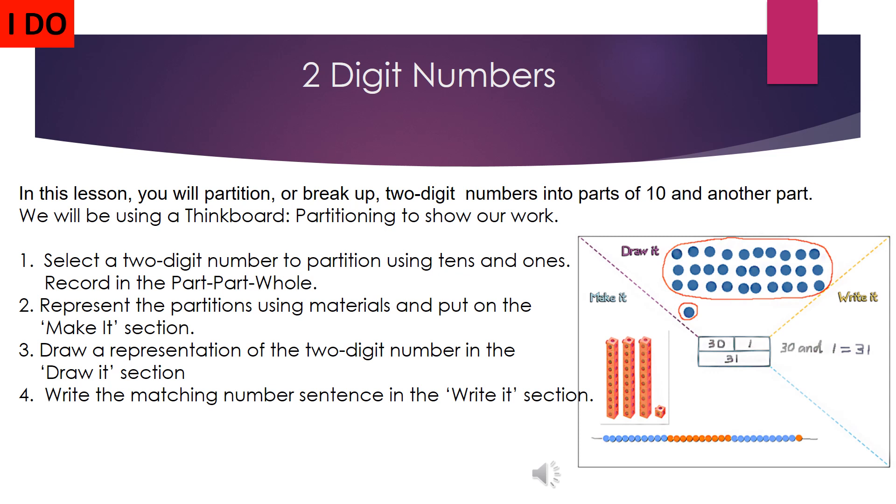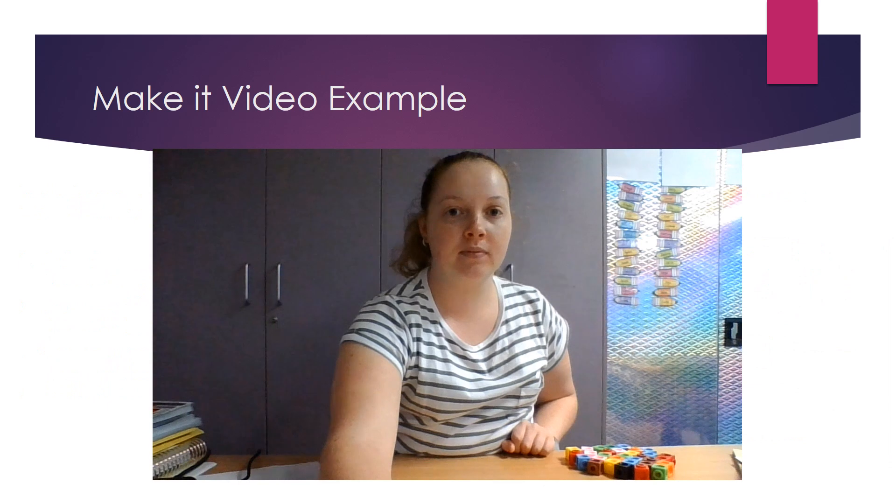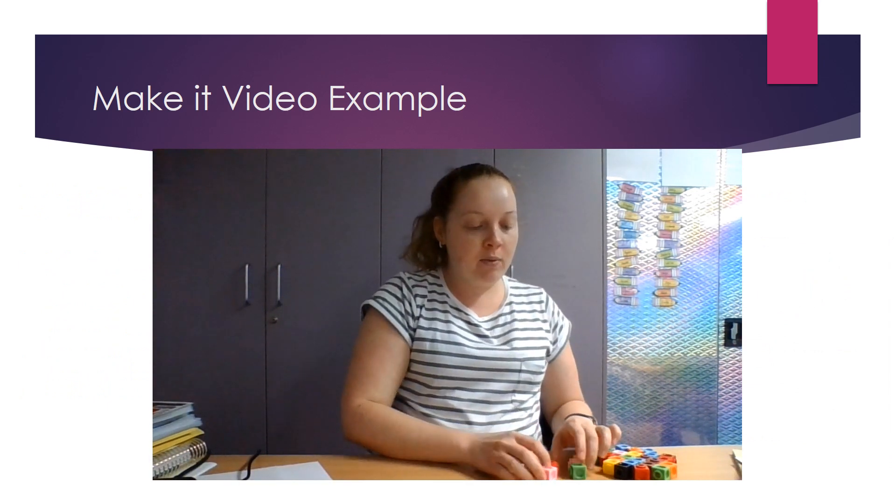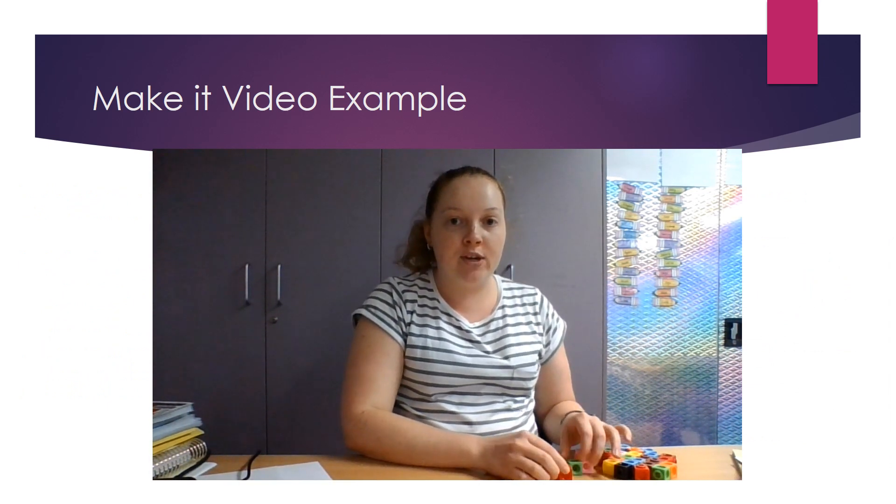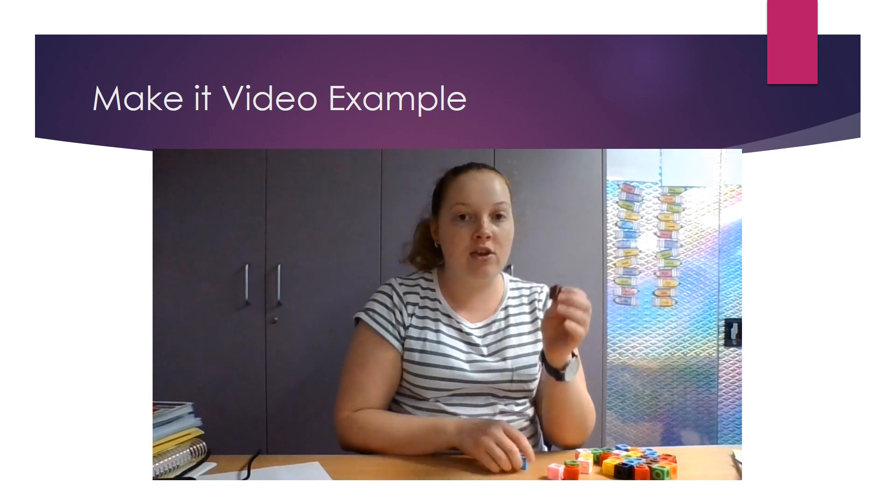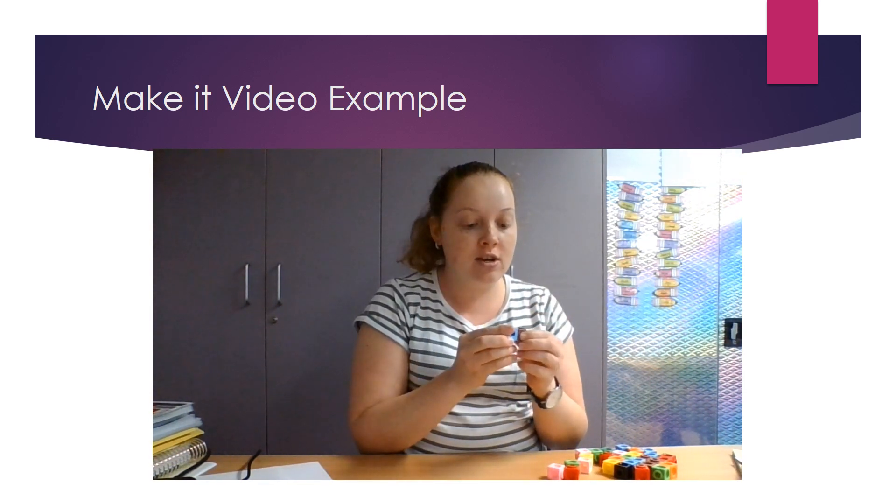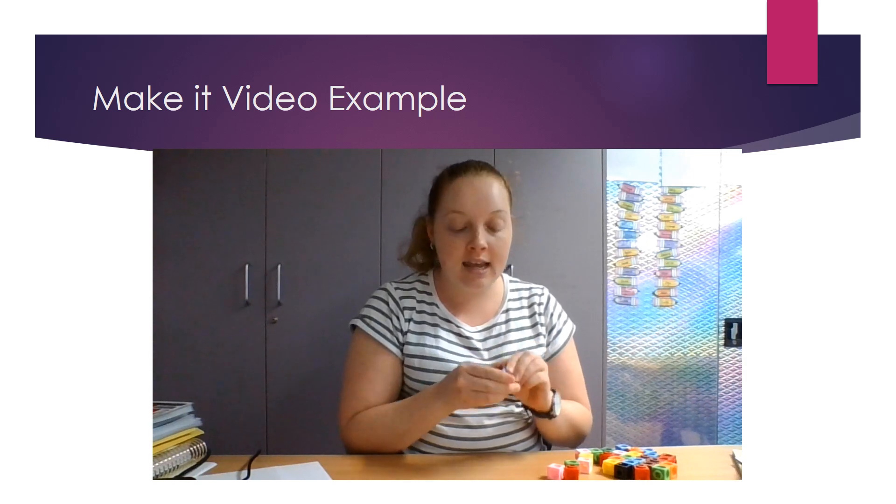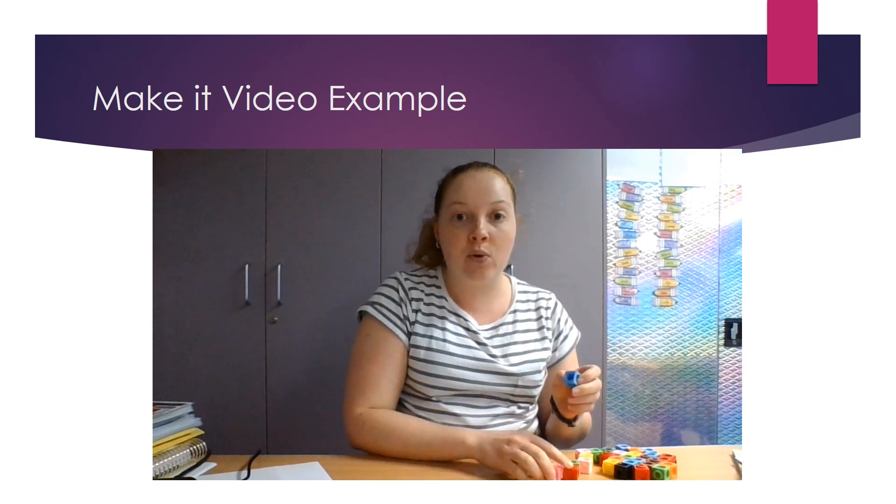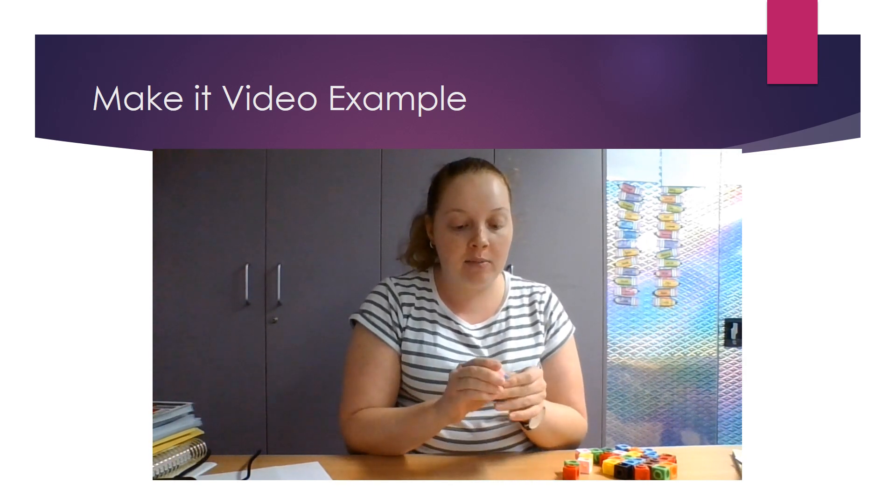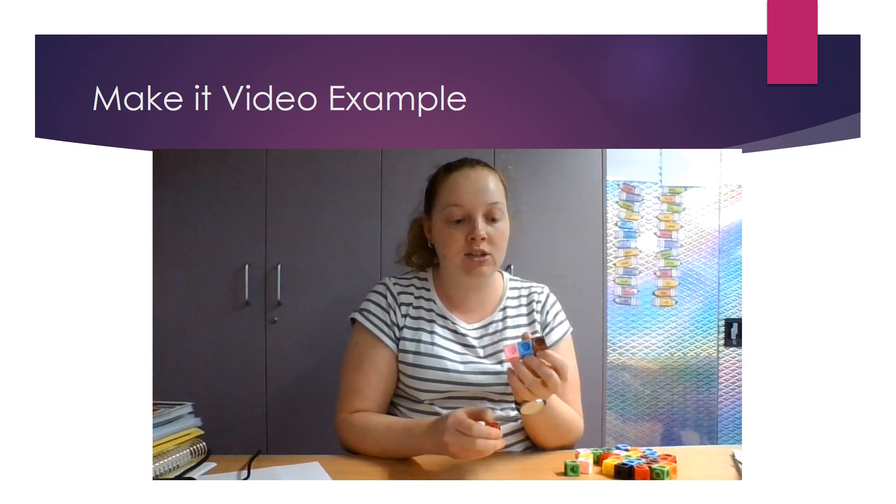Represent the partitions using material and put on the make it section. Three, draw a representation of the two-digit number in the draw it section. Four, write the matching number sentence in the write it section. Okay. Now, remember when you are making the number thirty-one, you need to make sure that you have some blocks. And you need ten ones to make one ten. Now, I am going to make the blocks to show you and remind you.